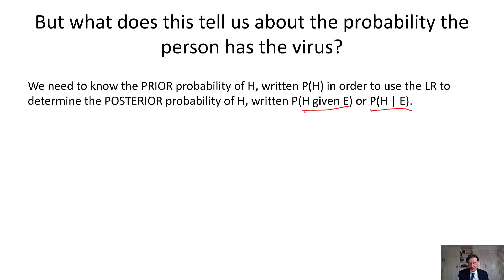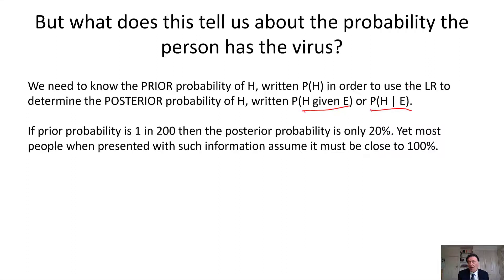Let's suppose that Sarah has no symptoms, and that it's estimated that the current population infection rate for such people is 1 over 200. Then the prior probability of H is 1 over 200. In this case, we can actually show that the posterior — the revised probability once you get the evidence — is actually only about 20%. And yet most people, when presented with such information, wrongly assume it must be close to 100%. In fact, there've been numerous experiments, particularly when medical experts are presented with similar scenarios, where they massively overestimate the posterior probability when given that type of evidence.